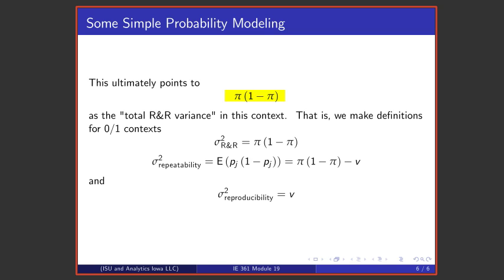So what we've got thus far in this discussion is that in zero/one contexts, the thing that we're going to call the R&R variance is the mean probability of calling an item defective as one looks across operators.